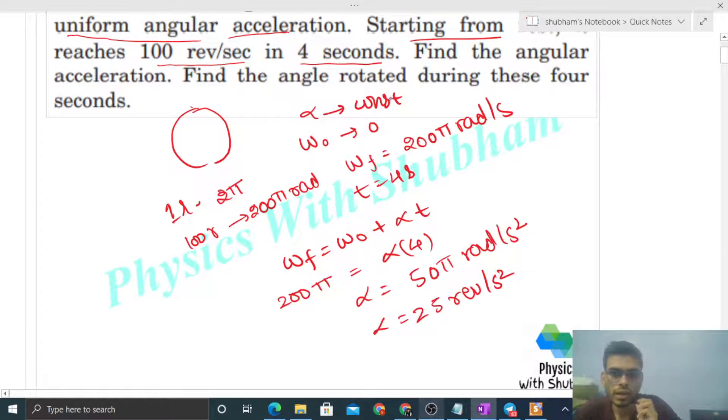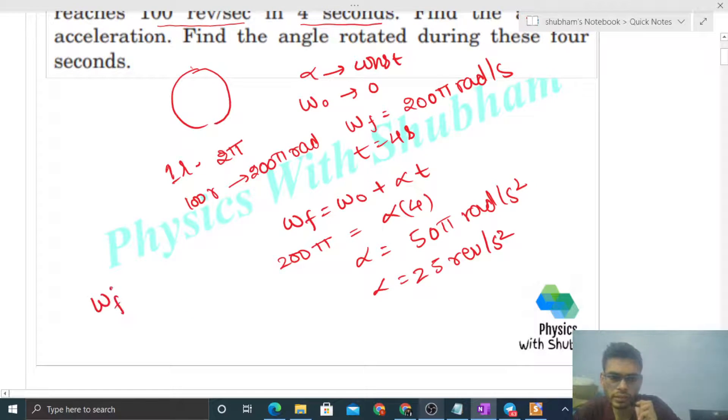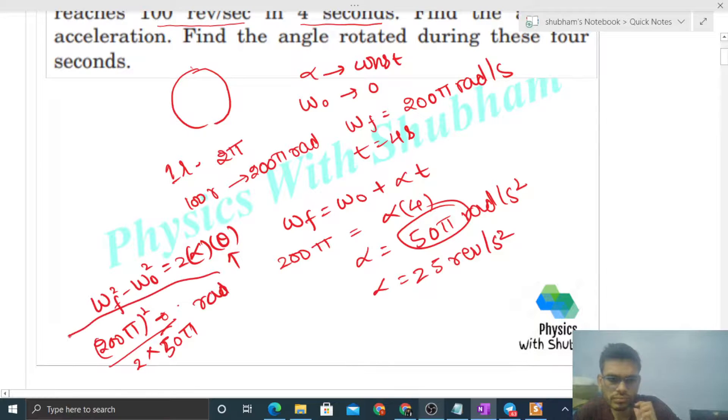Now find the angle rotated during these four seconds. You can use omega_final squared minus omega_initial squared equals 2 times alpha times theta. This is the angle rotated during these four seconds. So final omega is 200π squared minus initial omega zero, divided by 2 times alpha. Alpha is 50π, so it will be 50π. That is the angle in radians, and you can divide it by 2π to get it in revolutions.